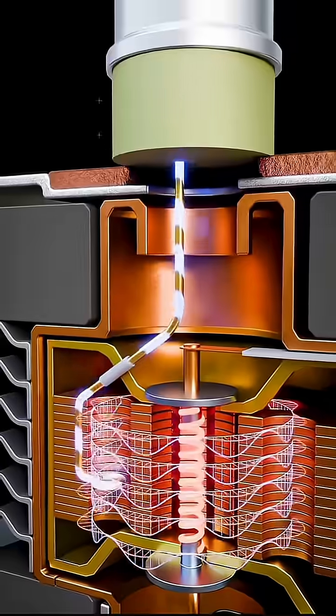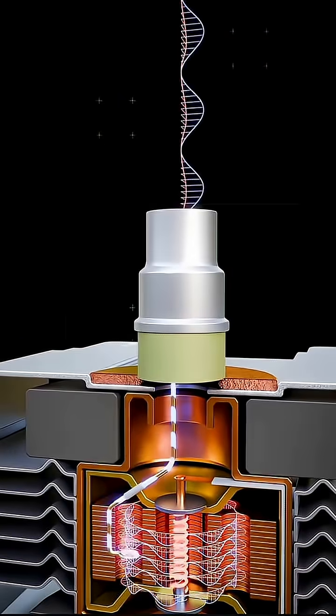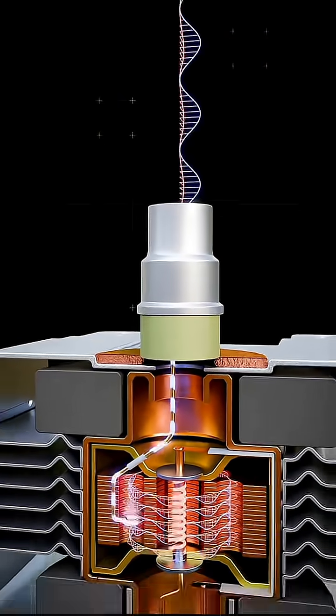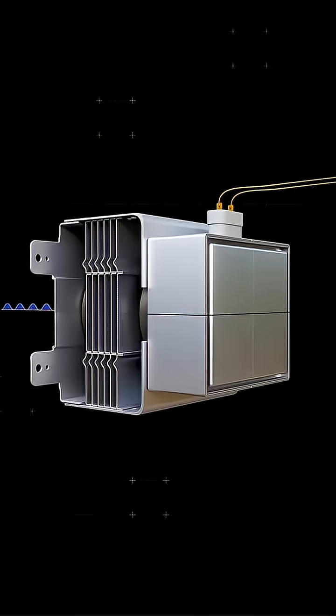This antenna picks up the electromagnetic microwaves and sends it through a waveguide, which is a hollow metal tunnel that directs the microwaves into the cooking chamber.